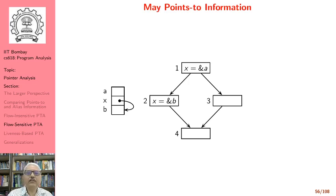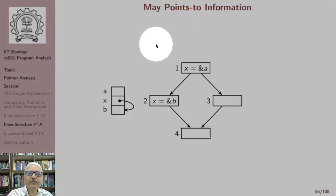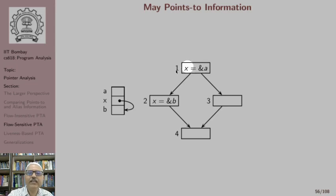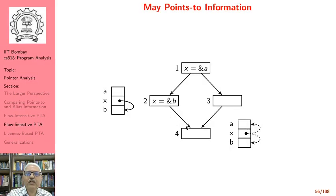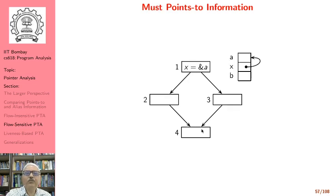This is an example of may information. Here x points to b and x points to a initially, and then because of this assignment x points to b — so along this path x points to b flows, and along this other path x points to a. Therefore this is a some-path property and this is may points-to information.